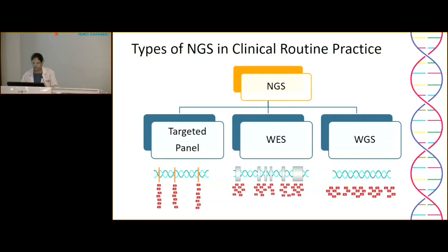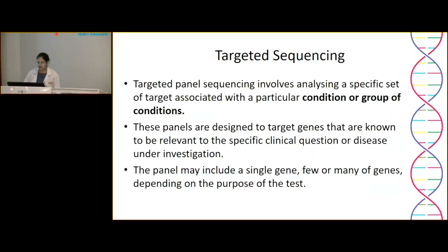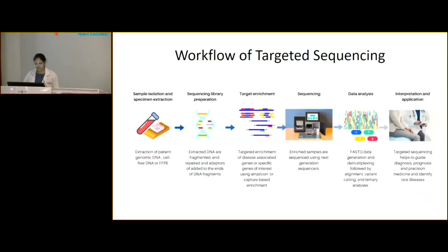For different types of NGS — targeted panels, whole exome sequencing, and whole genome sequencing — targeted sequencing involves analysis of a specific set of targets associated with a particular condition or group of conditions. Panels are designed to target genes known to be relevant to specific clinical questions, and may include a single gene, few, or many genes depending on the purpose.